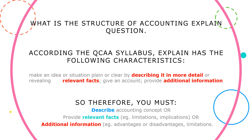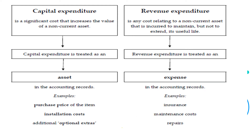We are going to go through what 'explain' actually means in respect of capital and revenue expenditure. Capital expenditure is a significant cost that increases the value of a non-current asset. It is treated in accounting as an asset in the current accounting records. A capital item will increase the purchase price of that item - examples include installation costs, additional optional extras, and freight and cartage in getting the asset to the place of business. It could also be an expense incurred that will extend the life of that asset.